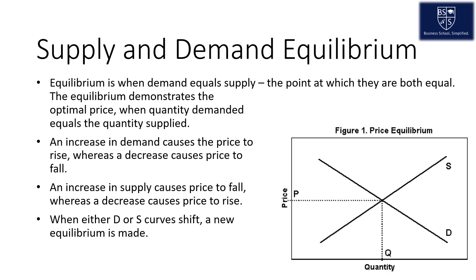Now we will discuss the supply and demand equilibrium, which is when demand equals supply. The equilibrium demonstrates the optimal price as shown when the quantity demanded equals the quantity supplied. An increase in demand causes the price to increase, whereas a decrease causes the price to fall.